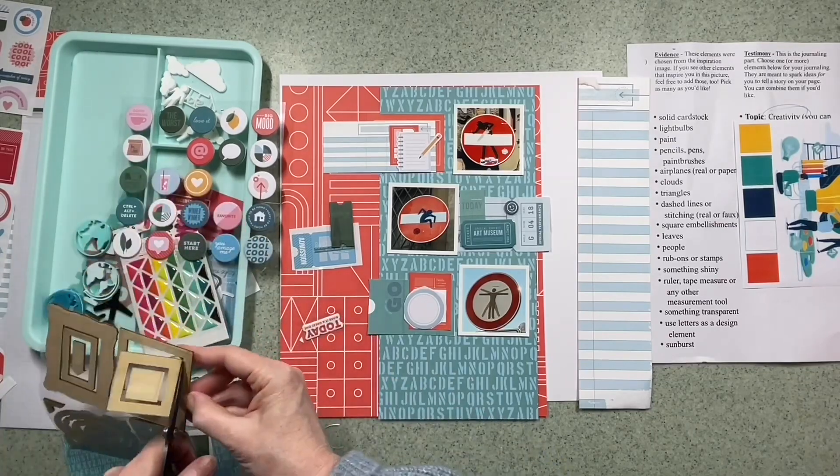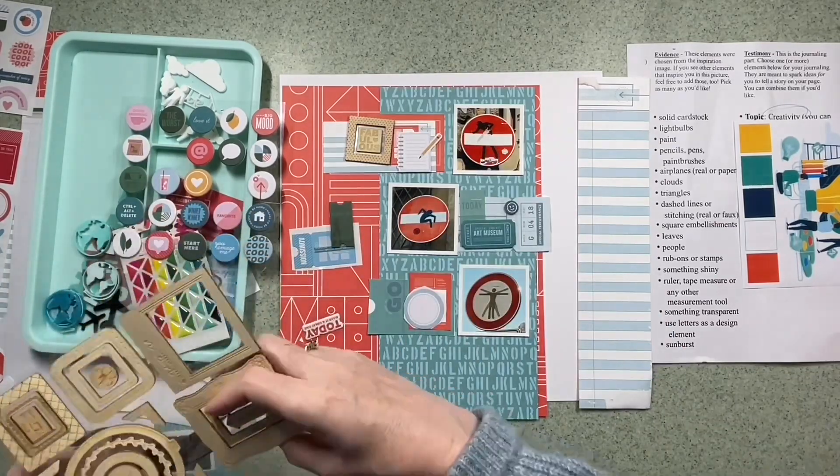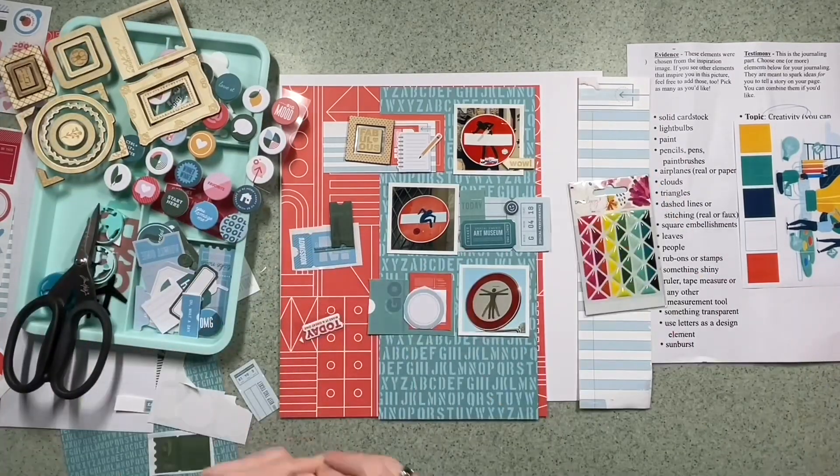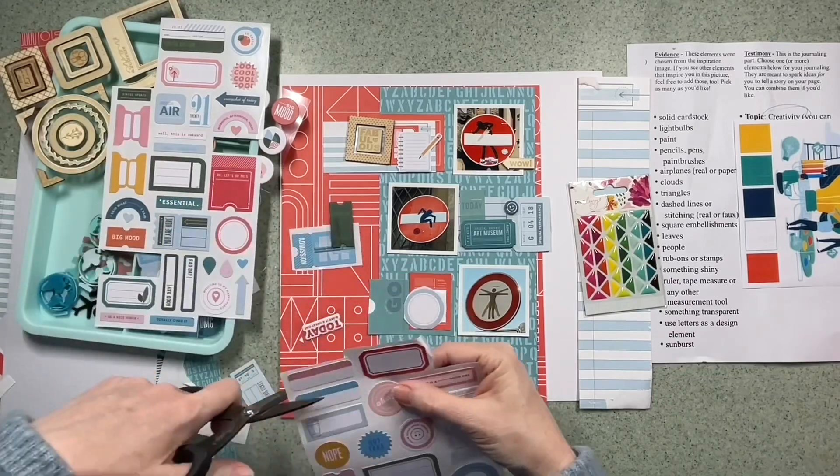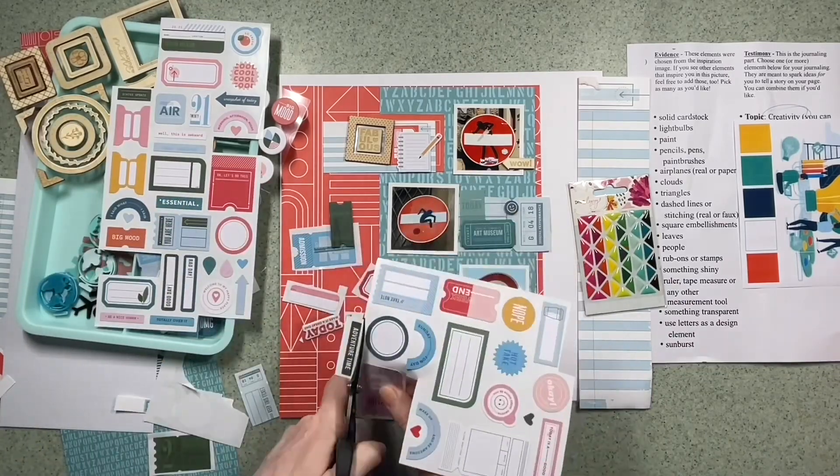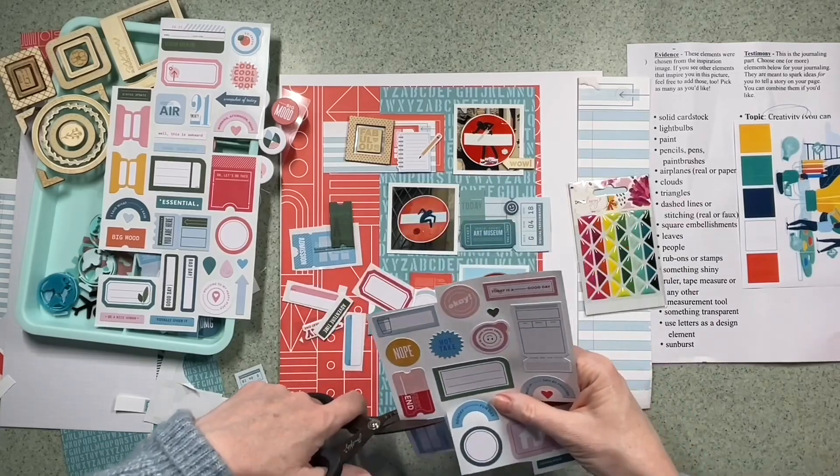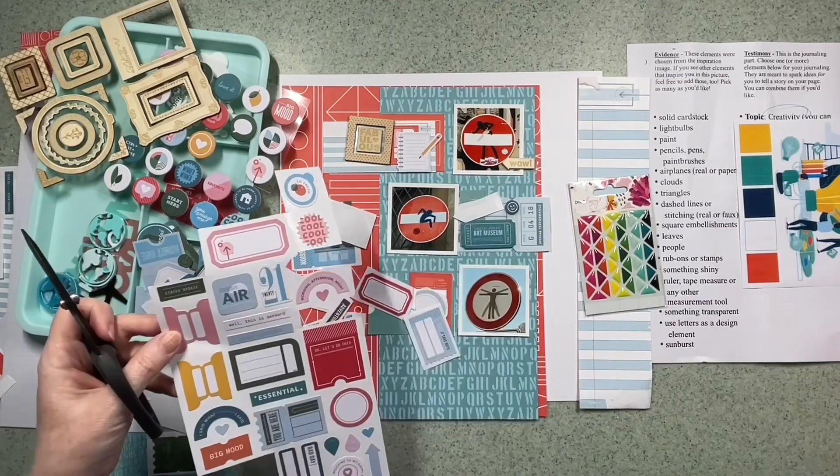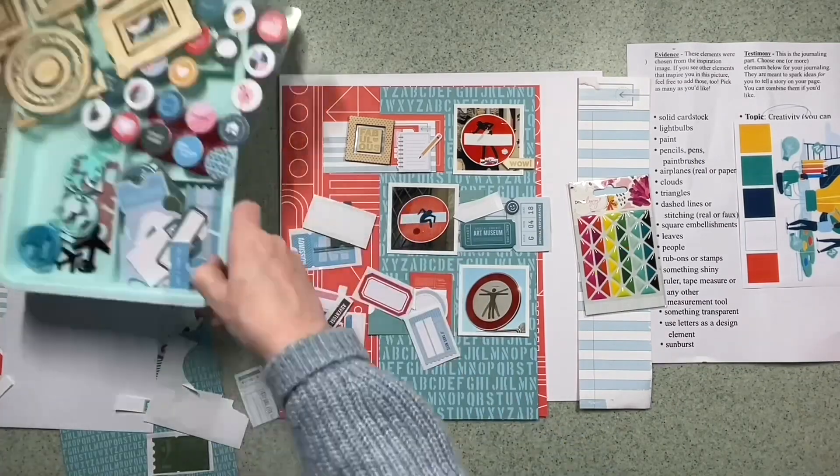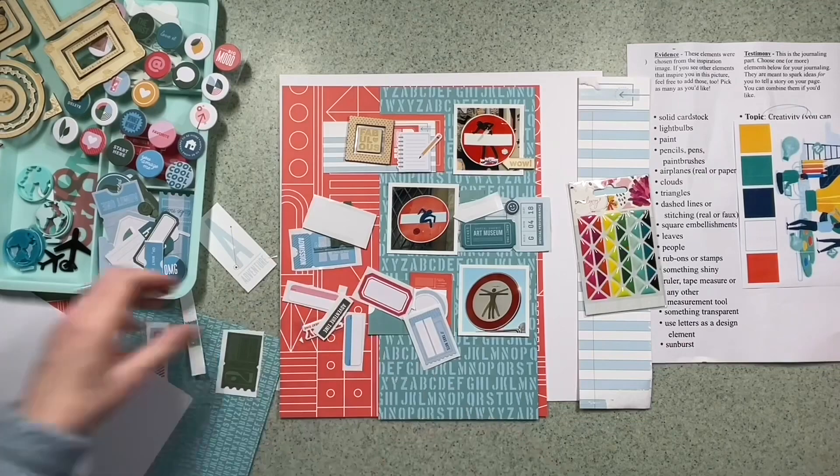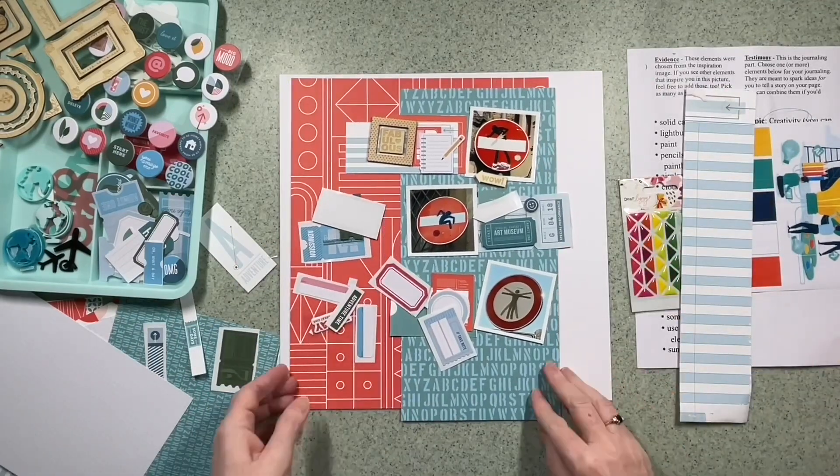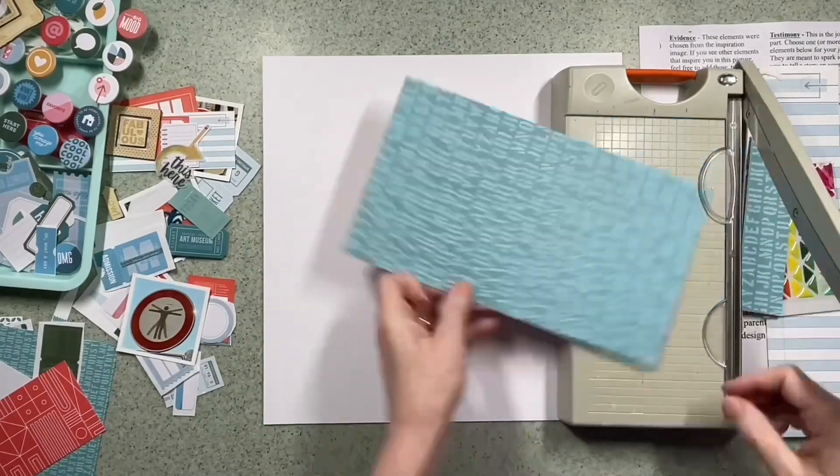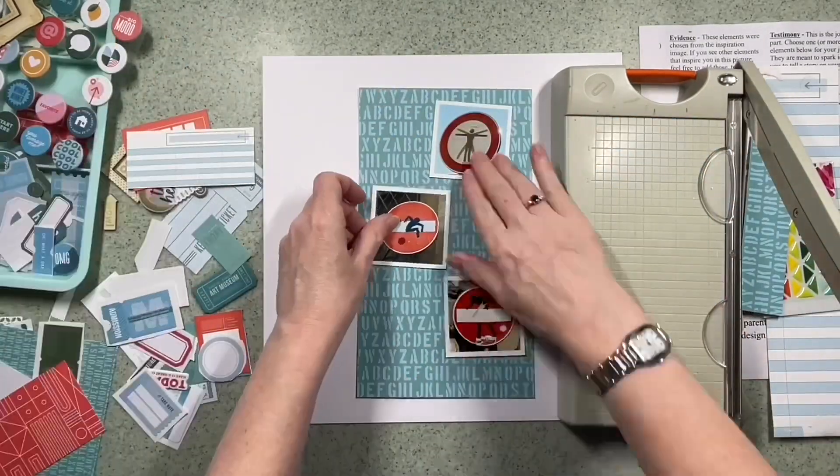One of the things on the evidence list says to use square embellishments, so I've got some square frames and words from Hipkit. It also talks about triangles and I found these enamel dots that are triangles. Sometimes before I even start a layout for a CSI challenge, I literally go around my craft space and shop my stash. I bring in things that I think might be useful. I might not use them all, but it means I'm trying to use things up.